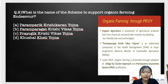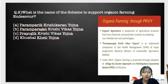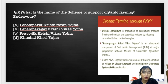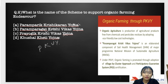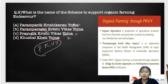Moving on to question two: what is the name of the scheme to support organic endeavors? The options are: A) Paramparik Krishikaran Yojana, B) Paramparagat Krishi Vikas Yojana, C) Prayogi Krishi Vikaran Yojana, D) Kushal Kheti Yojana. The correct answer is B — Paramparagat Krishi Vikas Yojana, also known as PKVY. None of the other options are real schemes.